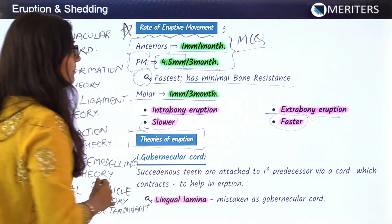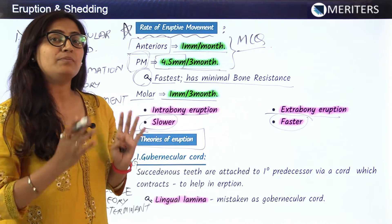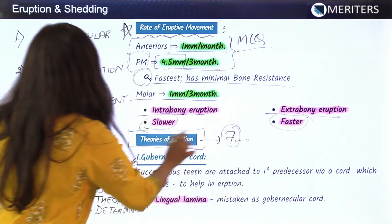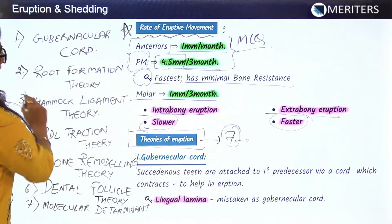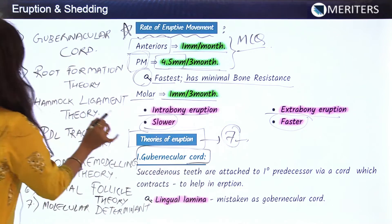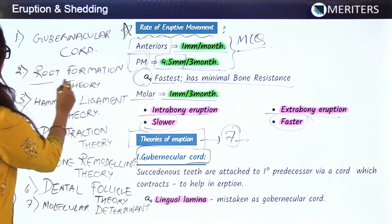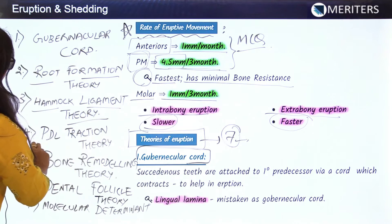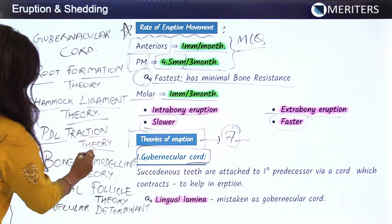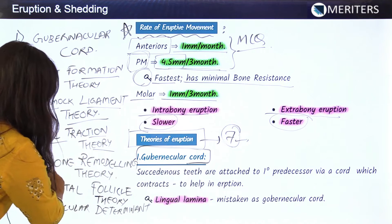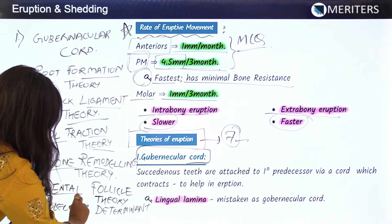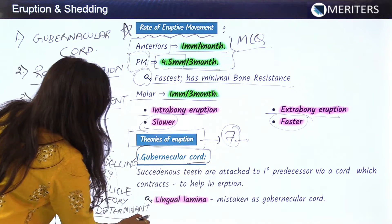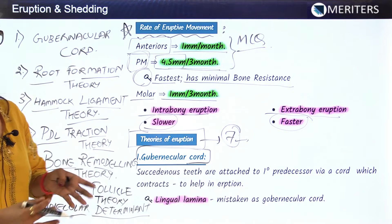Now we come to a very important topic: the theories of eruption. There are many theories from the past; we will categorize them into seven. First is the gubernacular chord theory, second is the root formation theory, third is the hammock ligament theory, fourth is the PDL traction theory, fifth is the bone remodeling theory, sixth is the dental follicle theory, and seventh is the molecular determinants theory.